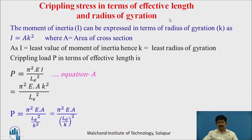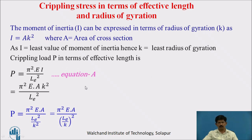Crippling stress in terms of effective length and radius of gyration: the moment of inertia can be written as I = Ak², where k is the radius of gyration and A is the cross-sectional area. I is the least moment of inertia, hence k will also be the least radius of gyration. We know Euler's formula for the crippling load: P = π²EI / L_eff². Now, in place of I, we write Ak².